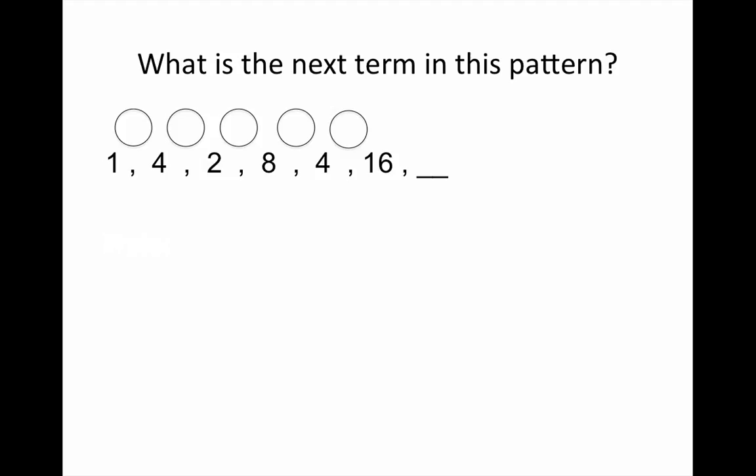What is the next term in this pattern? Let's take a look at the gap between the numbers. So, from 1 to 4 we go up by 3, then we go down by 2. We go up by 6, from 2 to 8. From 8 to 4 we go down by 4.